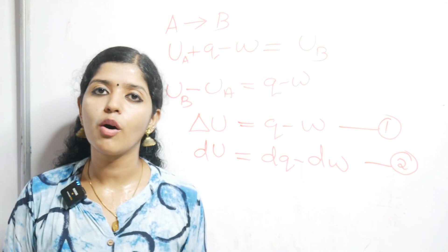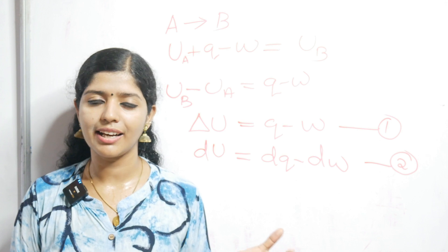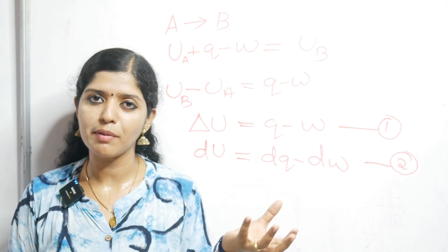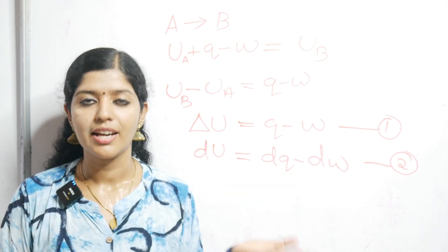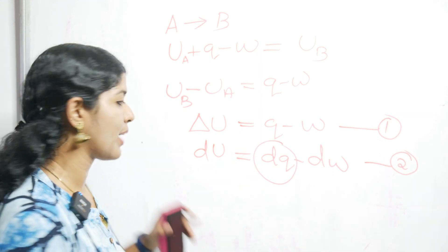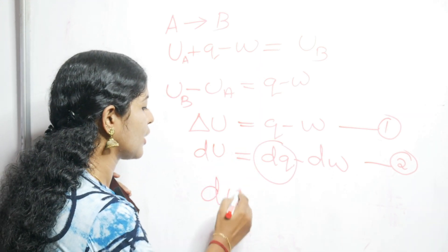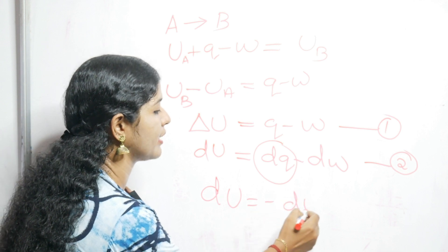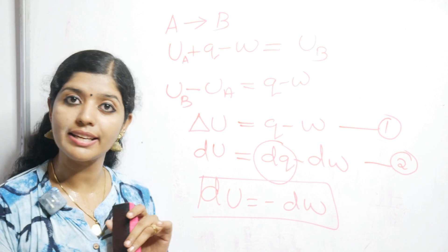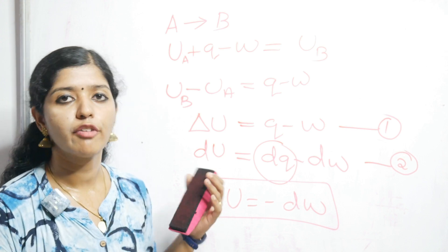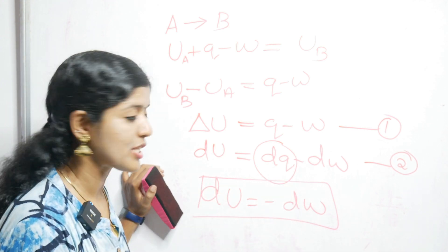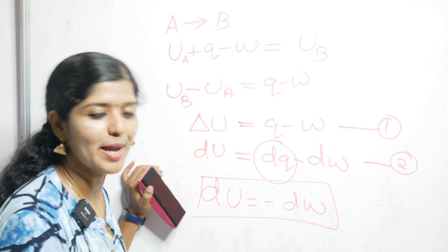Think of a thermal flask — if you hold a thermal flask, you cannot feel the hotness of the water because there is no exchange of heat. So in an isolated system, dQ will be zero, and you can say that dU equals minus dW. This is applicable only for an isolated system. For a non-isolated system, you will have the full equation: dU equals dQ minus dW.